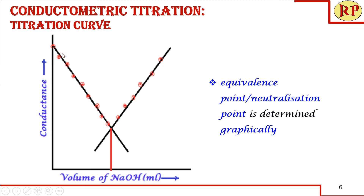We plot the titration curve with volume of NaOH on the x-axis against conductance on the y-axis. Using a scale, we draw two best-fit lines through the data points — one for the decreasing region and one for the increasing region. The intersection of these two lines gives the equivalence point; we drop a perpendicular to the x-axis and read off the volume of NaOH, which corresponds to the concordant titration value.